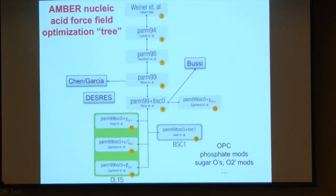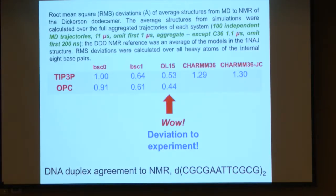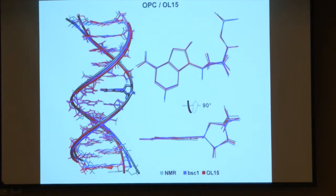Overcoming the sampling problem allows us to assess and validate the force fields, figure out where they need fixing, and optimize them. The family tree of AMBER force fields shows a lot of evolution from about the BSC0 Barcelona era. More recently we've started to play with van der Waals parameters to make them better. We can use either very long simulations or multi-dimensional replica exchange approaches to converge conformational ensembles of various models such as duplexes.